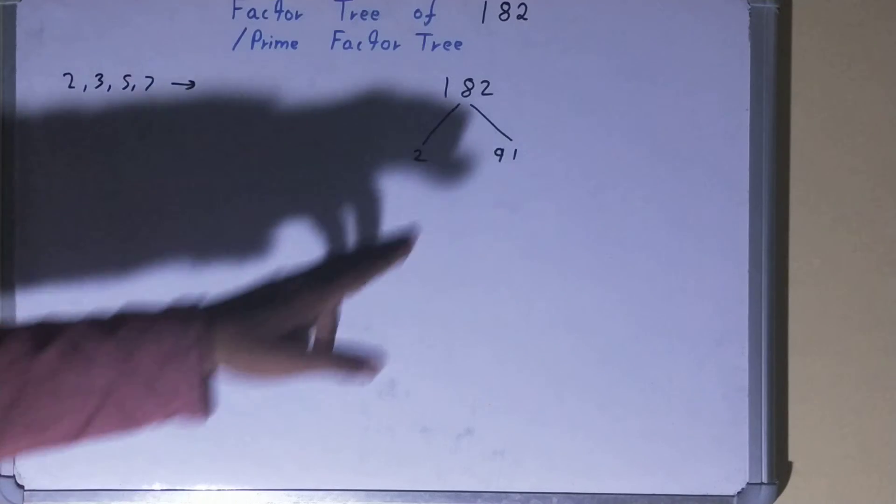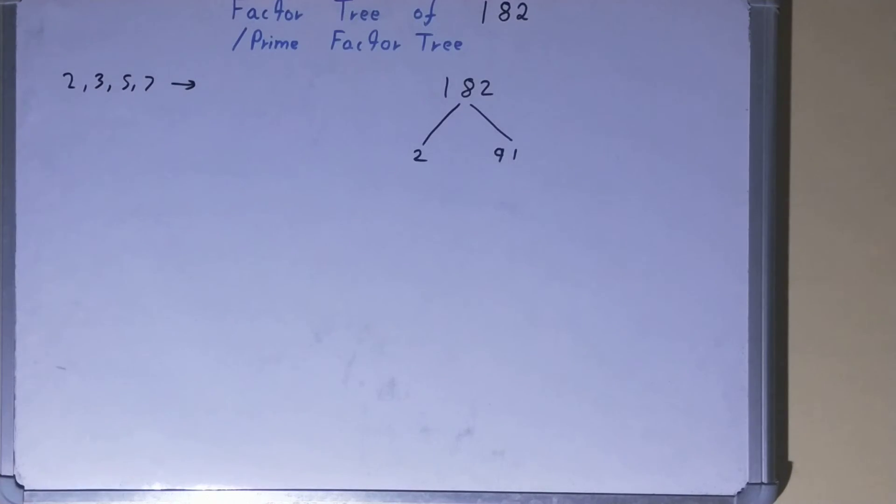Now, do we need to factorize this 91 also in the same way? The answer is yes, because 91 is a composite number just like 182, so we need to factorize it further.